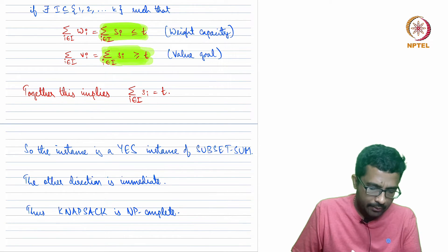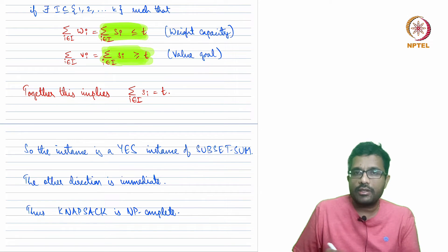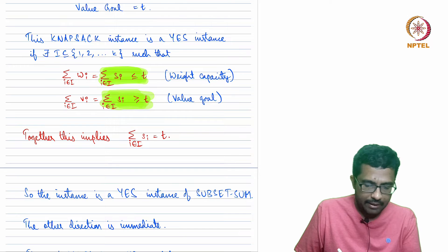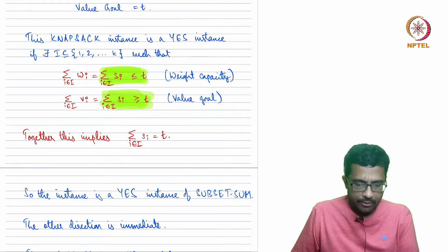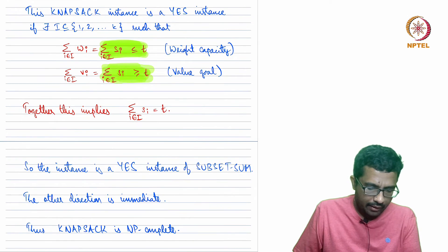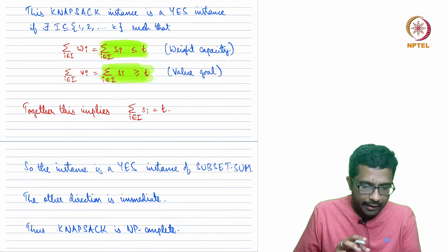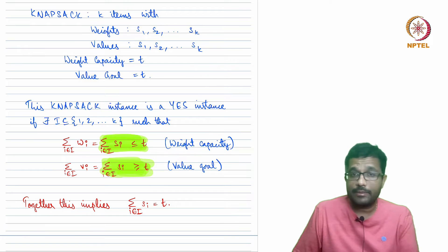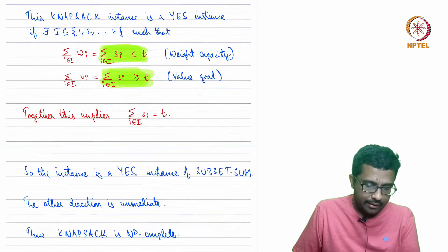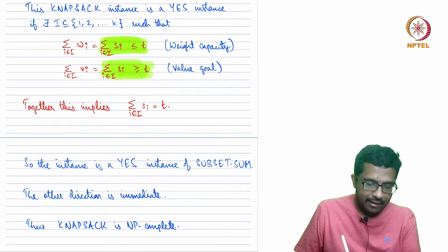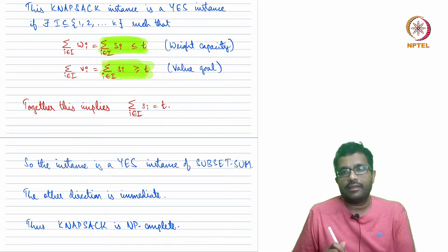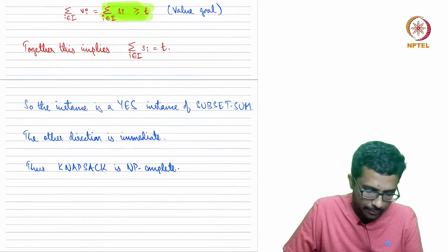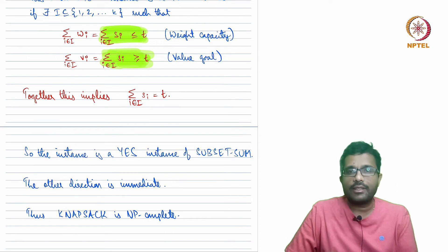This proves the correspondence: a yes-instance of Knapsack implies a yes-instance of Subset Sum, and vice versa. Together, this shows that Knapsack is NP-complete. It is a rather brief proof, but that is all there is to it.